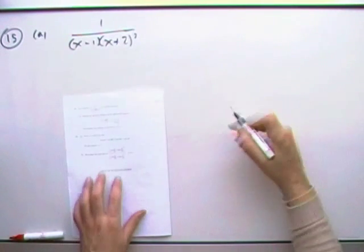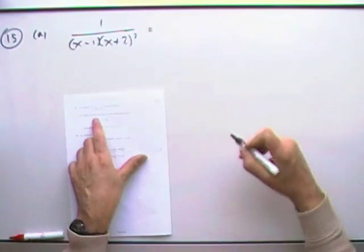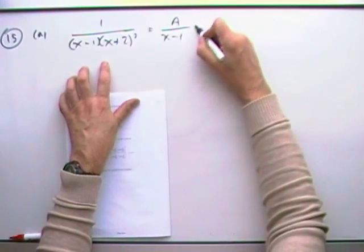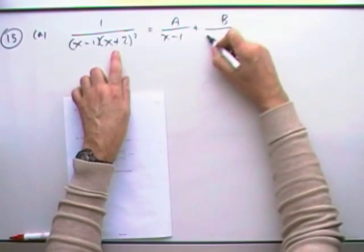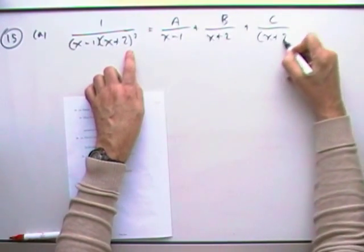Question 15. Express this in partial fractions. Back to sanity. There's two parts there, so I can have A over x minus 1 plus B over the first of that repeated root plus C over the whole lot squared.